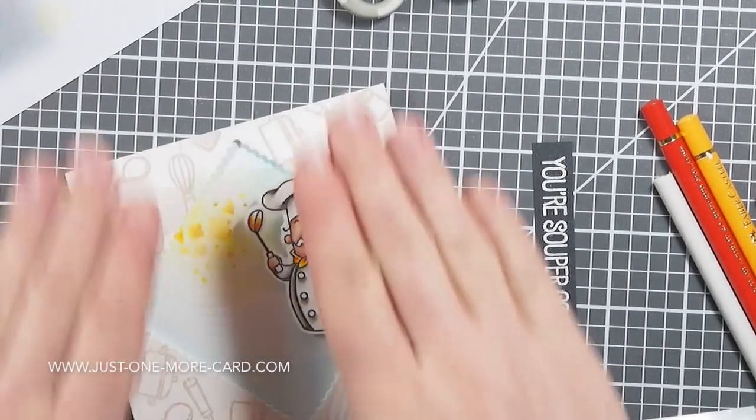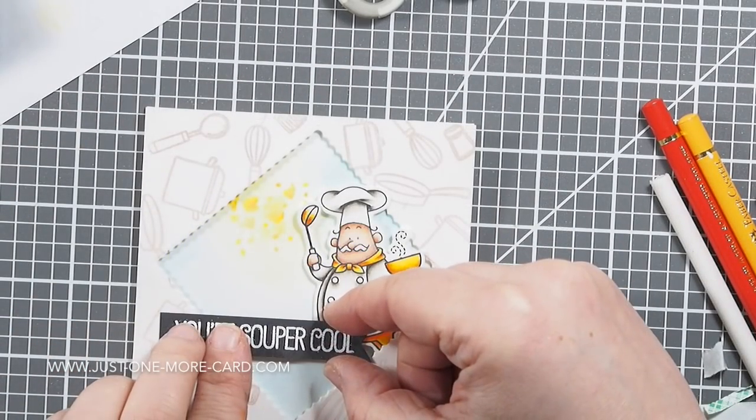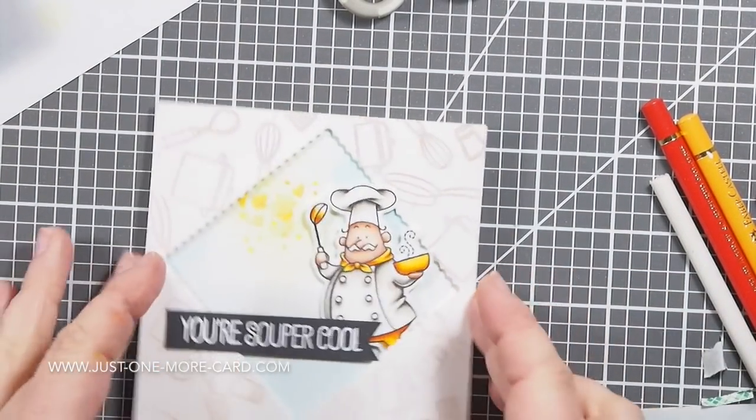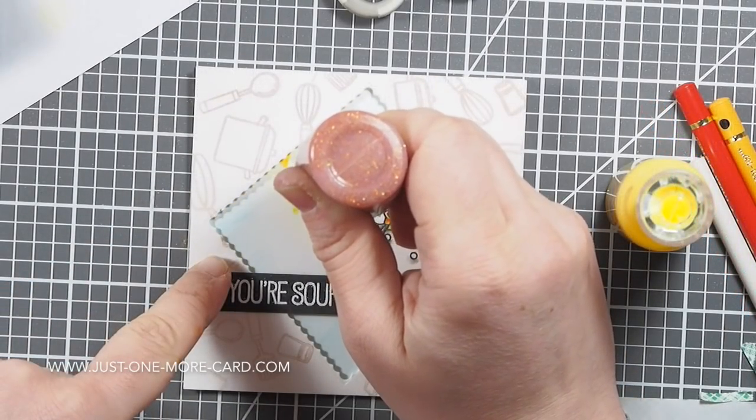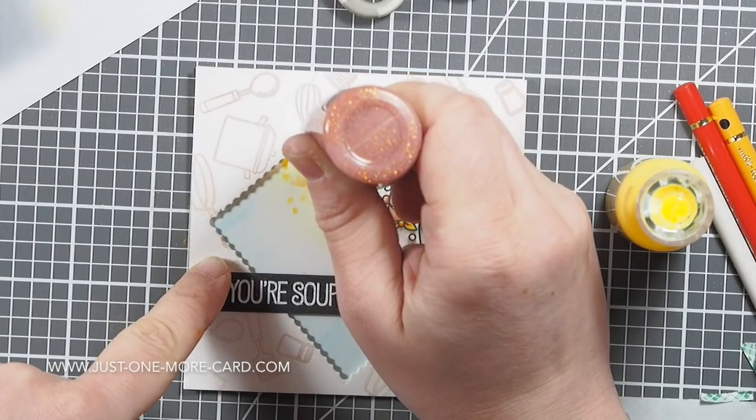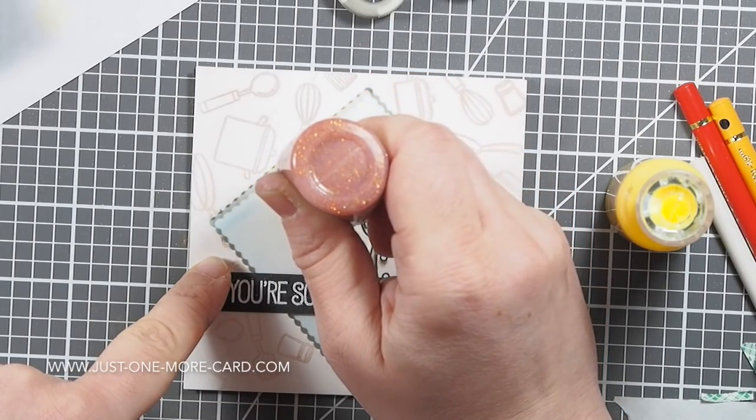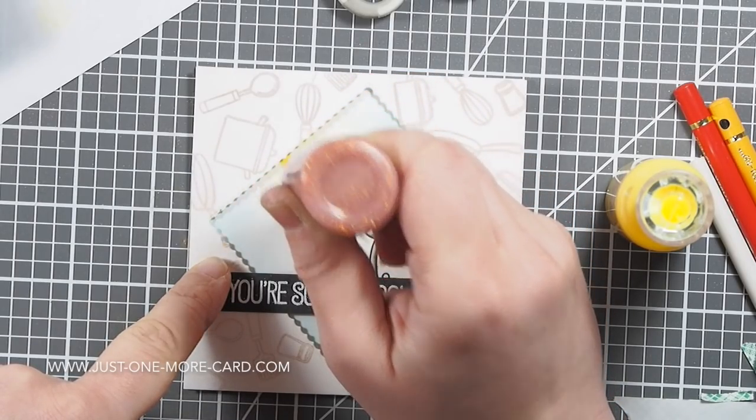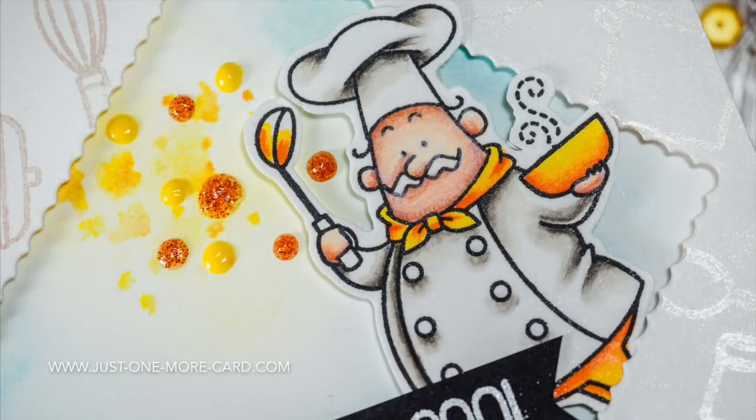I had tried to use watercolor to make it look as if he is spraying soup out of his bowl, but it didn't look right, at least it didn't look good enough in that moment. So I'm actually adding some Nuvo drops here on top of some of the watercolor stuff that I did.